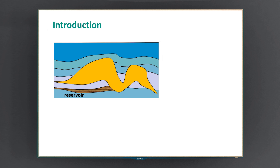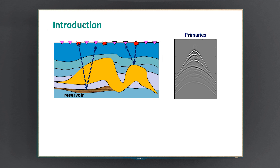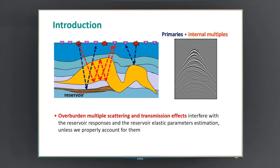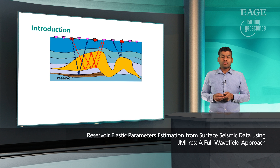In exploration seismic, we want to find potential oil and gas reservoirs inside the earth's subsurface, and for that we record data over the earth's surface. In an ideal world, we would only record primaries or first-order scattering. However, we also record internal multiples, which are higher-order scattering. In a situation where we have a complex overburden, we have overburden multiple scattering and transmission effects that interfere with your reservoir response, and consequently with reservoir elastic parameter estimation, unless we properly account for this overburden multiple scattering.